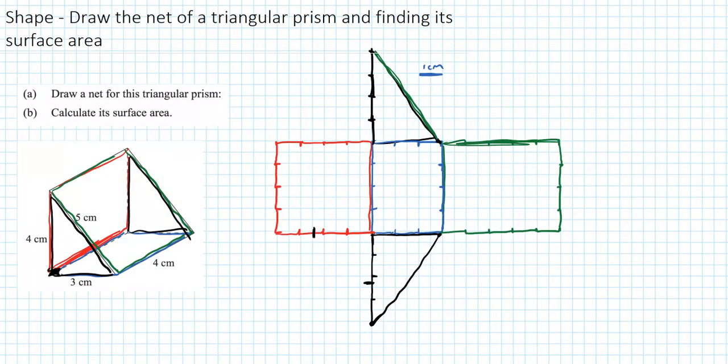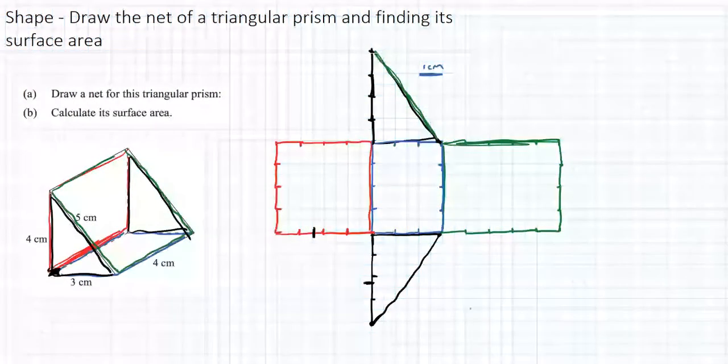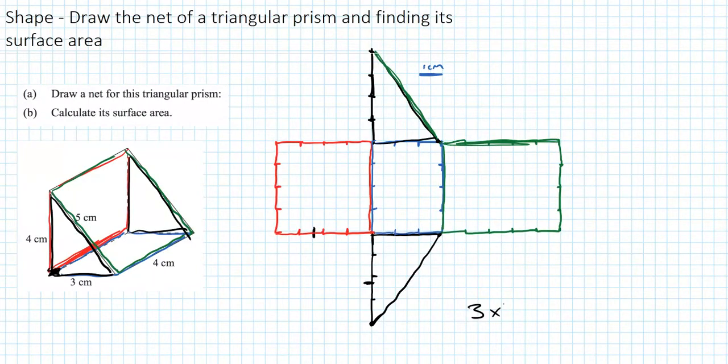Now, second part of this question is to work out the surface area. So let's do that. This time, let's start with the triangles. So to work out the area of a triangle, we've got to do the base times the height and then divide it by 2. So that is going to be 6 centimeters squared. So both of them are the same. So let's write that in there: 6 and 6. The blue rectangle, the base, will be 3 times 4. Well, that's going to be 12.